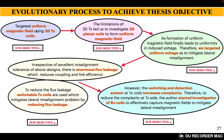If you see, this is the evolutionary process that we have actually went through. In sub-objective 1, we have targeted a uniform magnetic field using 3D transmitter coil antennas. This is the first step we underwent. Then later, what we understood is the limitations of 3D transmitter coils in practical implementation scenarios led us to investigate 2D planar coils to form a uniform magnetic field. That comes under sub-objective 2, or evolutionary process 2.